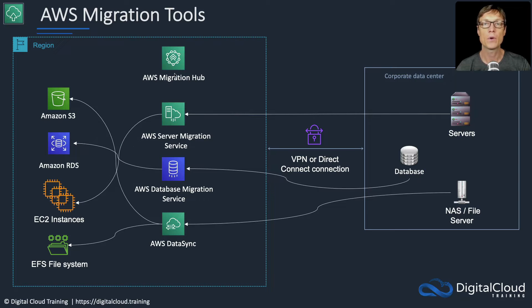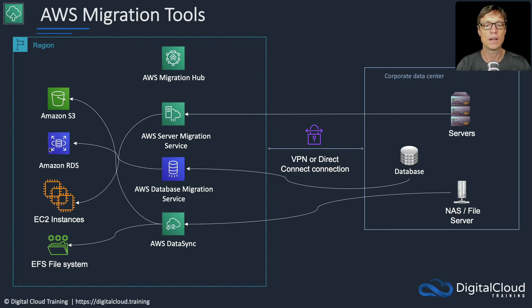At the top, we've got the Migration Hub, which is simply the overall view that connects all these services together so that you can manage your migrations. For servers, there's a Server Migration Service to migrate systems onto EC2. There's also the Database Migration Service to move databases onto Amazon RDS, and DataSync for synchronizing data from on-premises storage systems into storage like Amazon S3 and EFS.